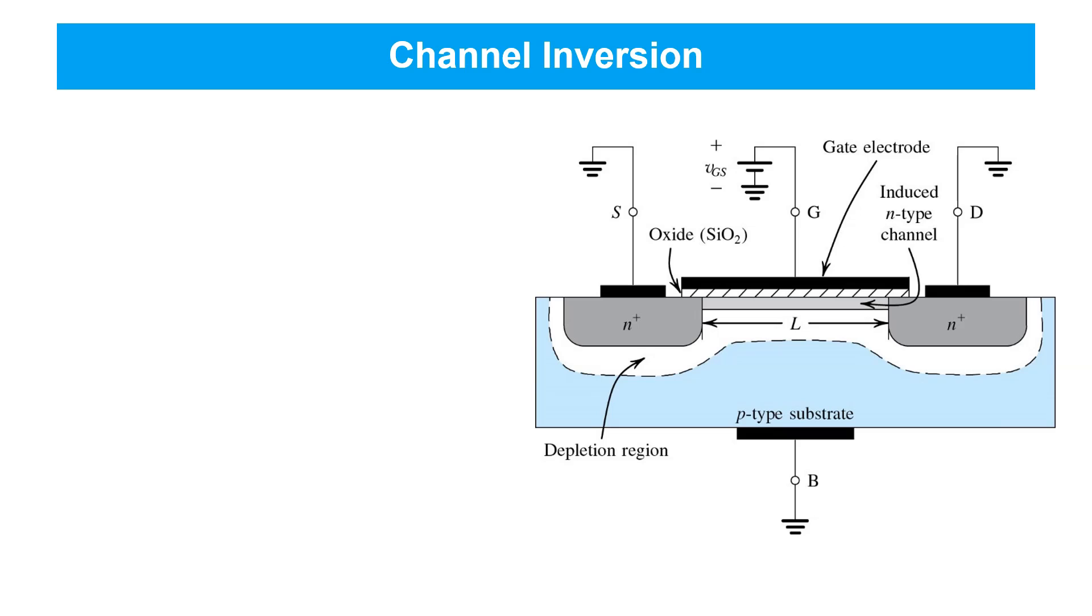Next, we consider what happens with the source, drain, and body regions all shorted to ground and a positive voltage VGS applied to the gate. This induces an electric field from gate down to the body, which attracts negative charge carriers, electrons, to the surface of the MOSFET, the channel region immediately below the gate.